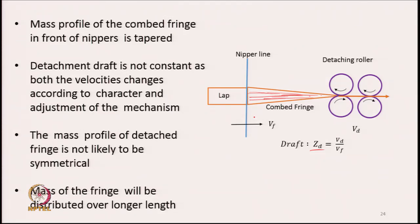If the draft had been constant, the mass profile of the detached fringe would have been similar to what existed prior to entry between the detaching roller nip — a tapered profile would have remained tapered. But because the draft is not constant in the combing zone, the tapered profile will not remain tapered once it has been drafted and delivered by the detaching rollers. The mass profile will also not be symmetrical, and the mass of the fringe will be distributed over a longer length due to the draft.